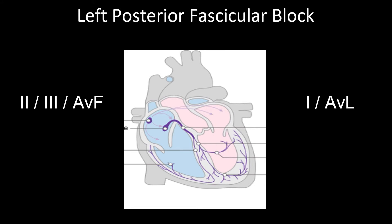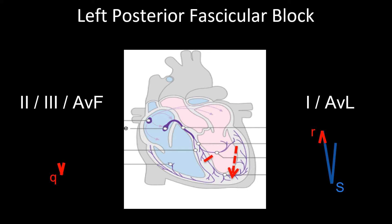With left posterior fascicle block, depolarization does not proceed down the left posterior fascicle but instead proceeds down the right bundle and the left anterior fascicle. This creates an initial small Q wave in leads 2, 3, and AVF as the anterolateral portion of the left ventricle depolarizes away from the inferior leads and towards leads 1 and AVL, creating a small R wave in leads 1 and AVL. However, there is then slow depolarization toward the inferior septum of the left ventricle, shifting the axis toward the bottom right and creating an S wave in leads 1 and AVL and an R wave in leads 2, 3, and AVF.